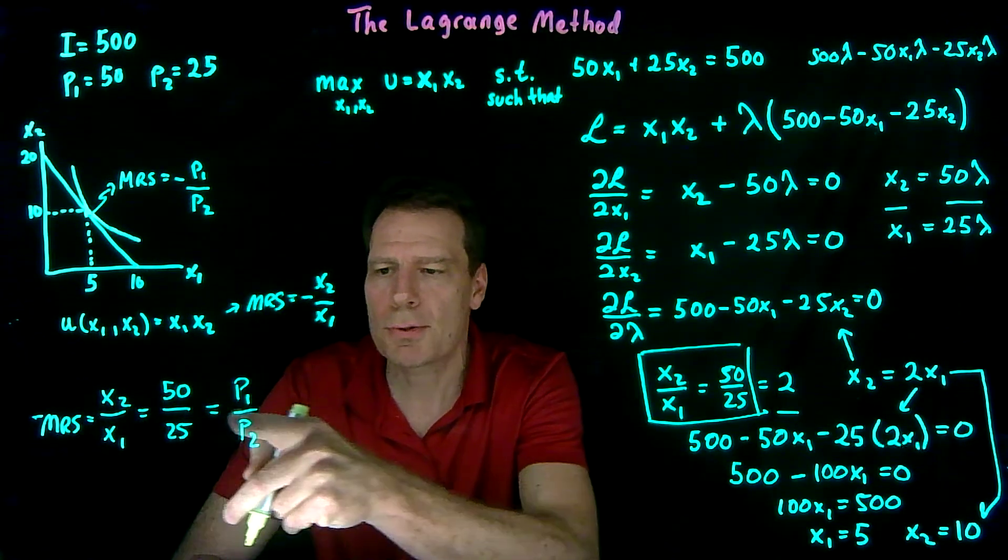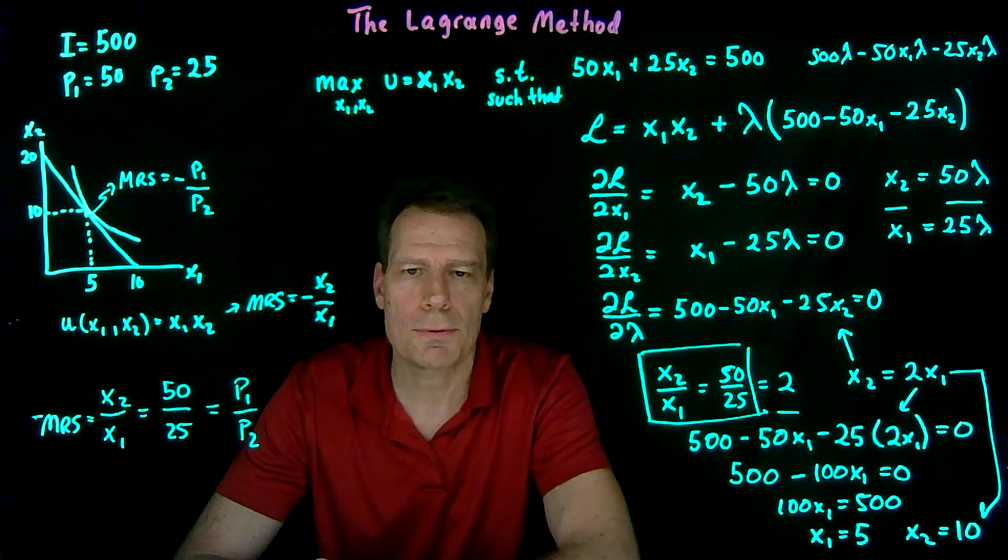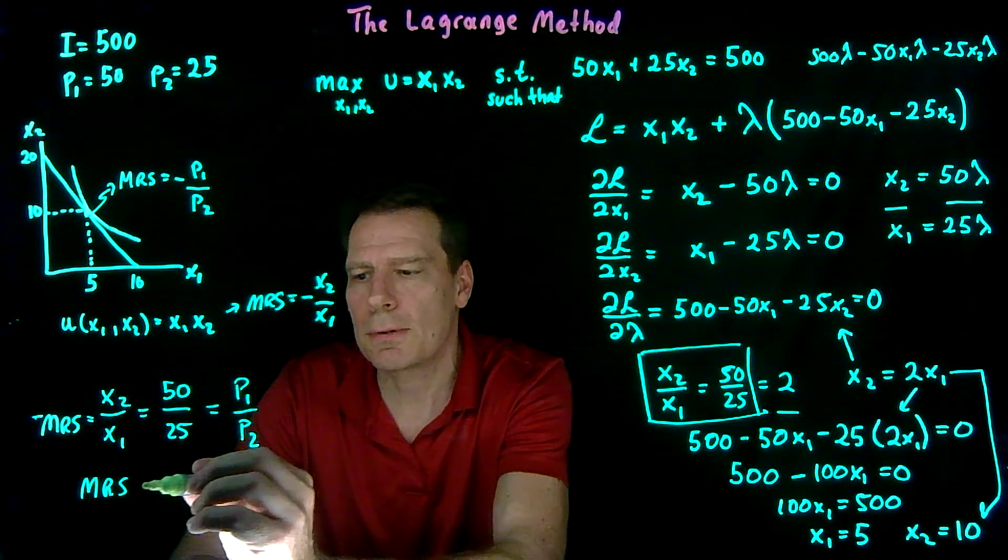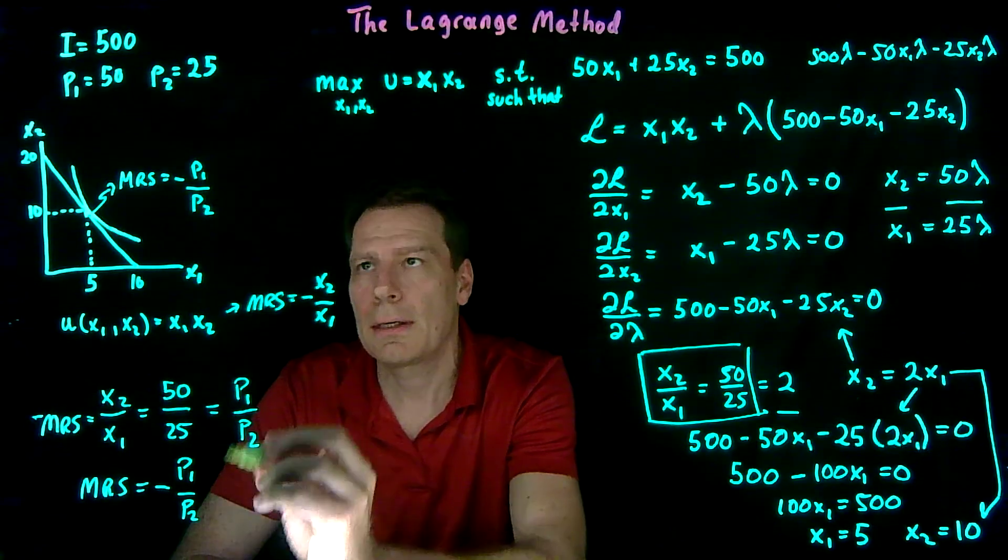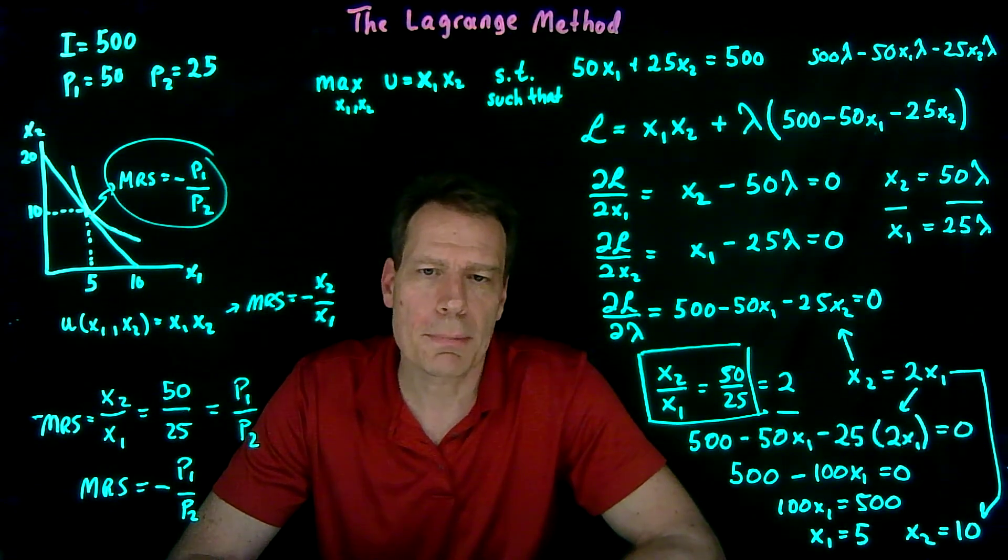So the equation says minus the marginal rate of substitution is equal to the price of good 1 divided by the price of good 2, which is the same as saying that the marginal rate of substitution is equal to minus P1 over P2. Exactly the condition we need at the optimal bundle.